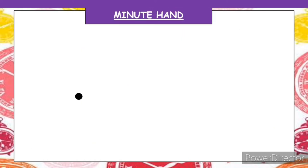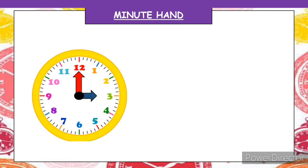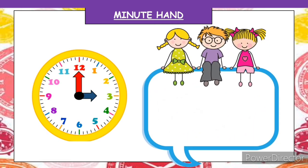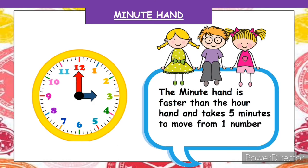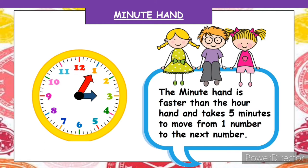In the given clock, the blue hand is the hour hand and the red hand is the minute hand. The minute hand is faster than the hour hand and takes five minutes to move from one number to the next number. See, it is taking only five minutes to move from 12 to 1.